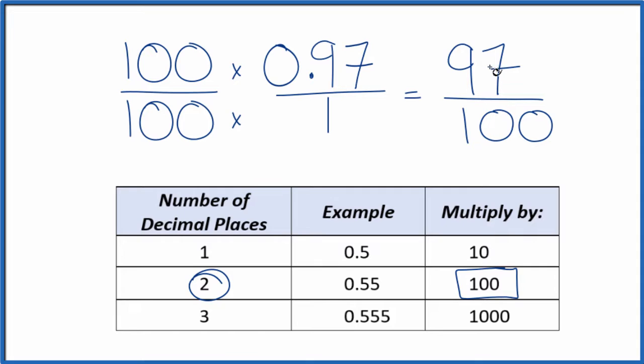And we have our fraction, 97 over 100. So the decimal 0.97 equals the fraction 97 over 100. We can't reduce this any further. If you divide 97 by 100, you'll get 0.97.